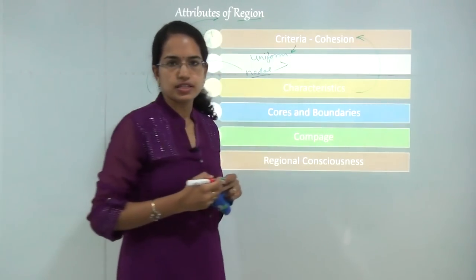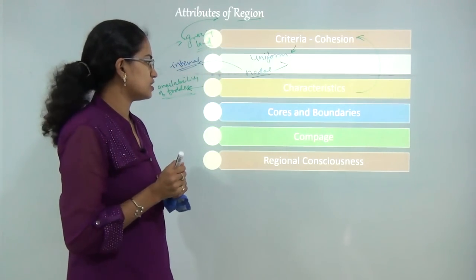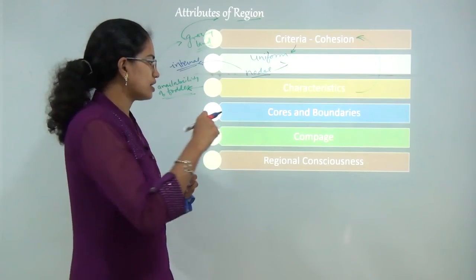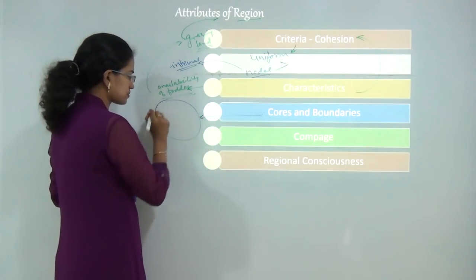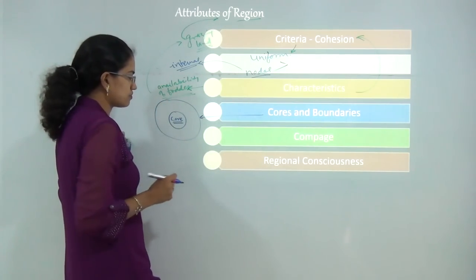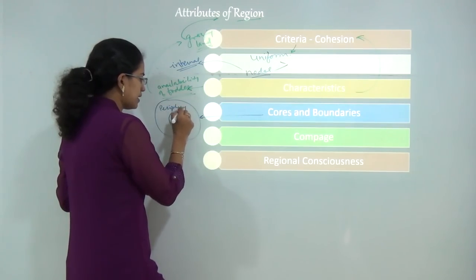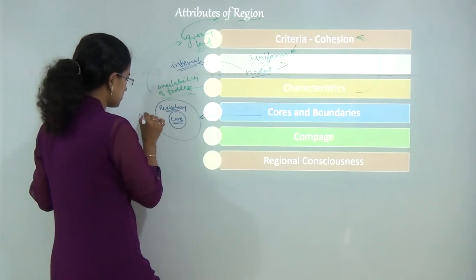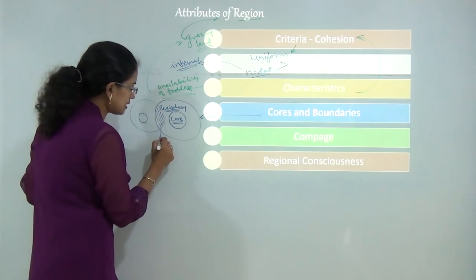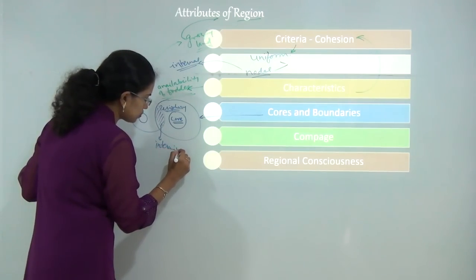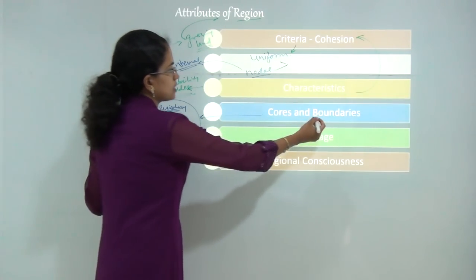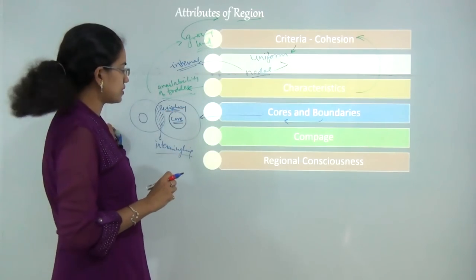Then you have cores and boundaries. Cores are the intense expressive areas - the areas which have very similar characteristics and are towards the heart of the region. The core is where we will find the real characteristics of the region. Then you have the periphery, where there is intermingling of characteristics from adjacent regions. Boundaries are defined based on the core and the periphery.